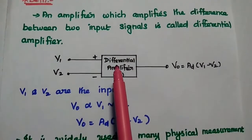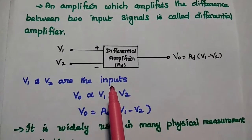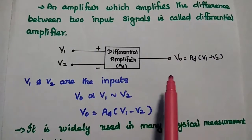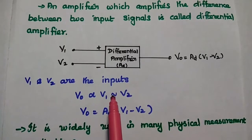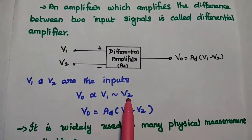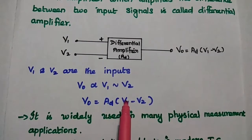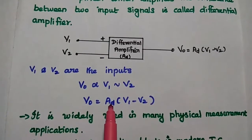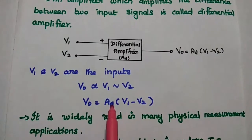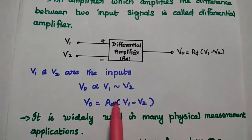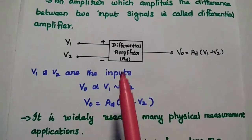This is the basic diagram of differential amplifier. Here V1 and V2 are the input signals at the input side. V0 is the output voltage which is proportional to the difference between the inputs V1 and V2. We can express that value by multiplying this difference with the factor AD. This AD is the proportionality constant, also known as the differential mode gain. It defines the amplification factor of this amplifier circuit.